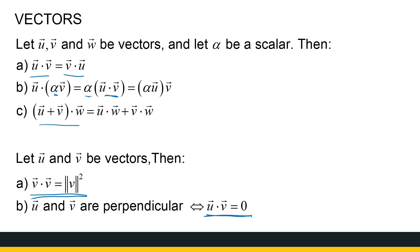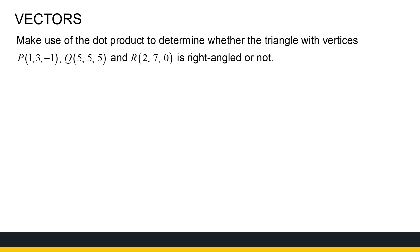For the last example, let's use the dot product to determine if a triangle with given vertices is a right-angled triangle. I'm in R3 — P, Q, and R are all ordered triplets, so they are points in R3, not vectors. The dot product works with vectors, so I need to generate vectors from those points and see if any are perpendicular.